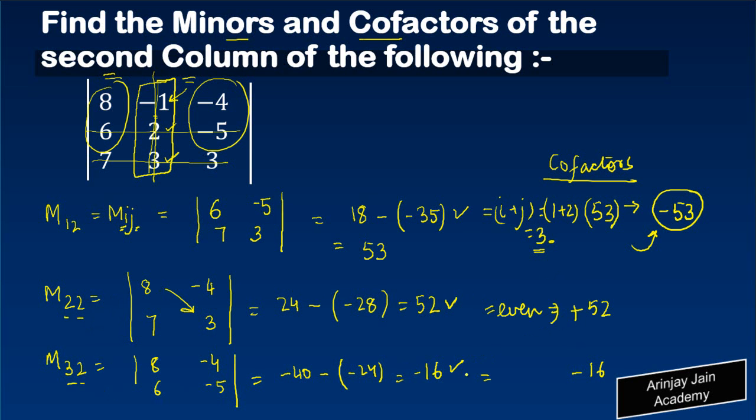Here it is 3 plus 2 which is 5. 5 is odd, so we will apply a negative value over here. Now this already has a negative value, so what do we do? We make it positive. And that's how you get the value of the cofactors.